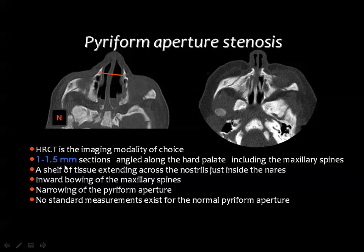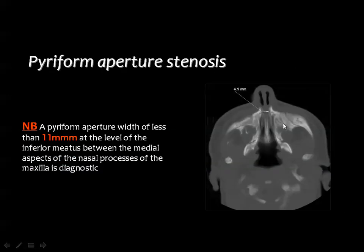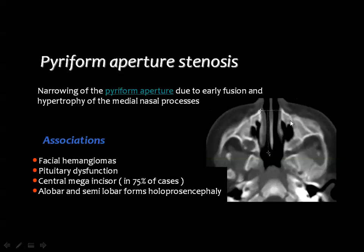For diagnosis of this condition, we need very specific CT sections. There is no universally fixed distance, but literature states that an aperture narrower than 11 millimeters is considered stenotic. CT allows easy measurement of this distance. Commonly associated anomalies include facial dysmorphia, hypothalamic-pituitary dysfunction, and central mega incisors, which are found in about 75% of cases.